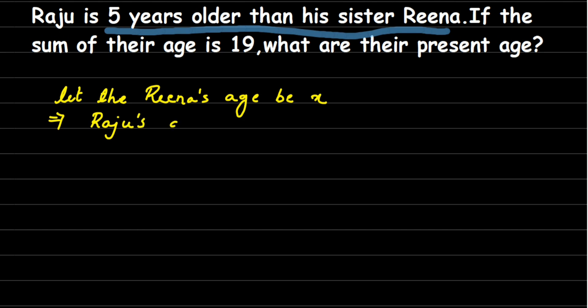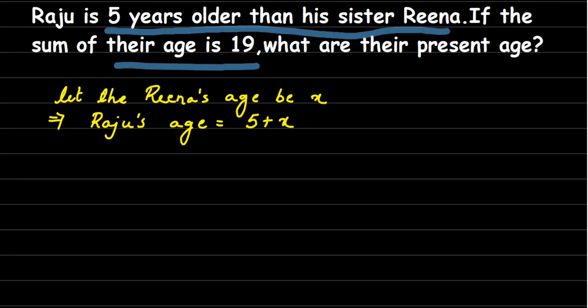We've been given that Raju is five years older than his sister, so 'older' means we add five to whatever Reena's age is. So Raju's age will be x plus 5. Now, we're told that if you add their ages the sum is 19, meaning Reena's age plus Raju's age equals 19.